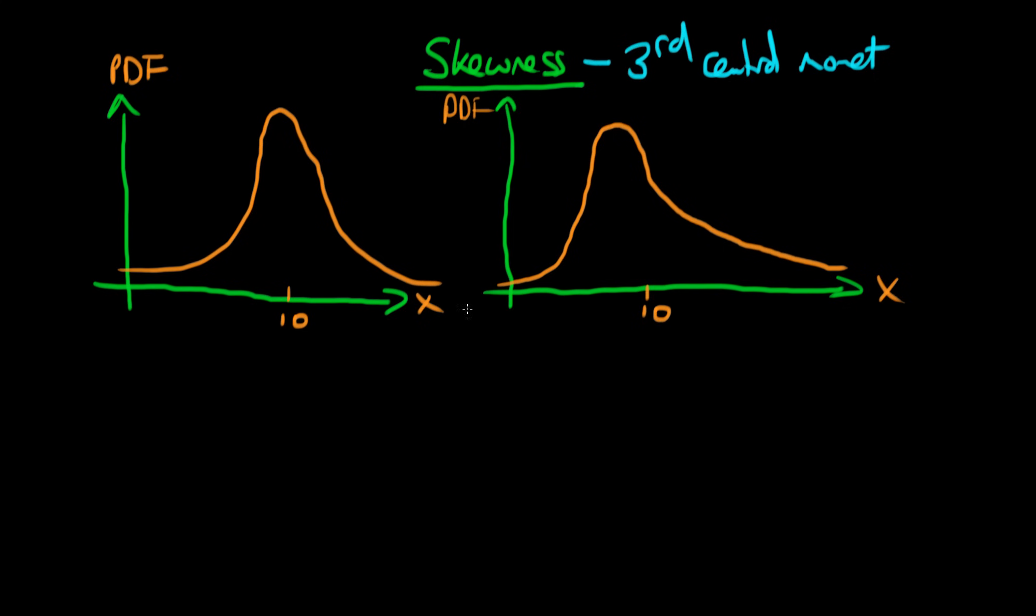This second distribution also has a mean of 10, but notice that this second distribution isn't symmetric, whereas the first one is.